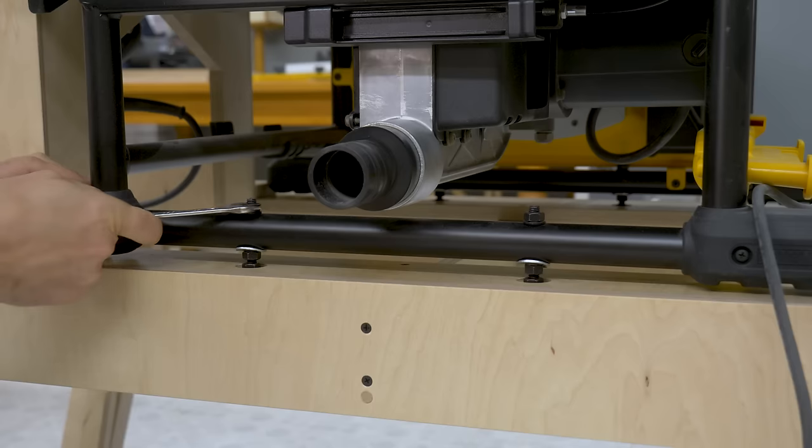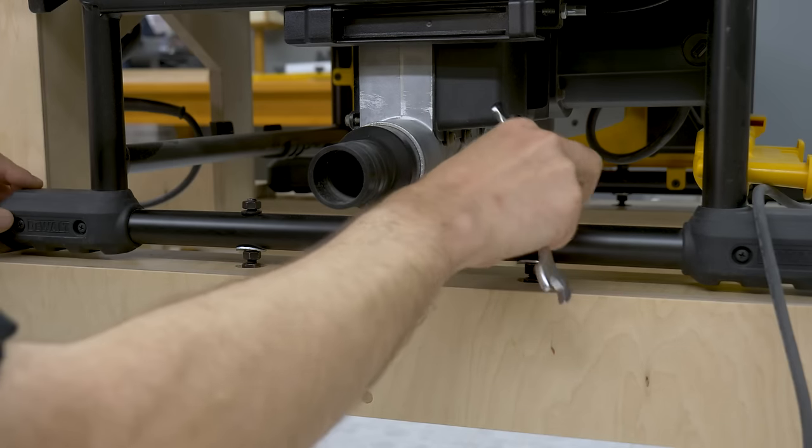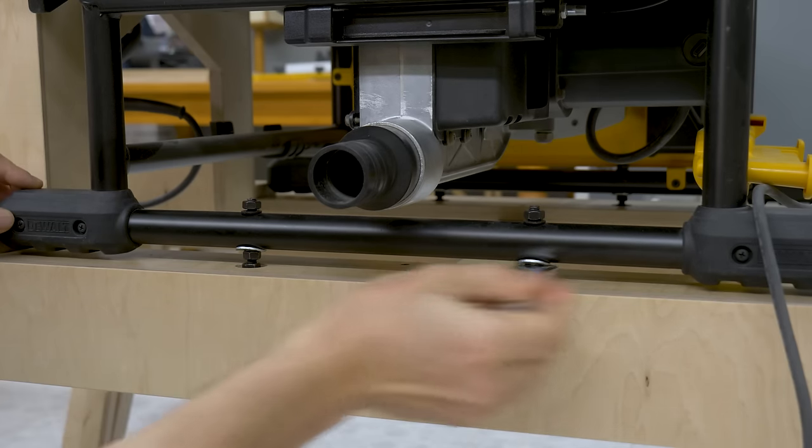Finally, I'm going to level the bench saw with the router work table using the four bolts I had installed on the folding stand.